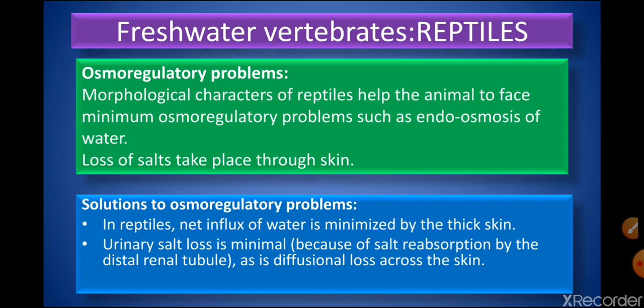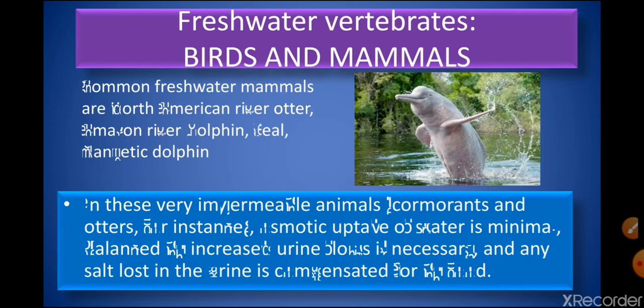Freshwater reptiles face minimum osmoregulatory problems due to their morphological characters. The problems that do exist are endosmosis of water and minimal loss of water through the skin. Solutions: net water influx is minimized by thick skin; urinary salt loss is minimal because of salt reabsorption by the DCT (distal convoluted tubule); and diffusional loss across the skin is also minimized.